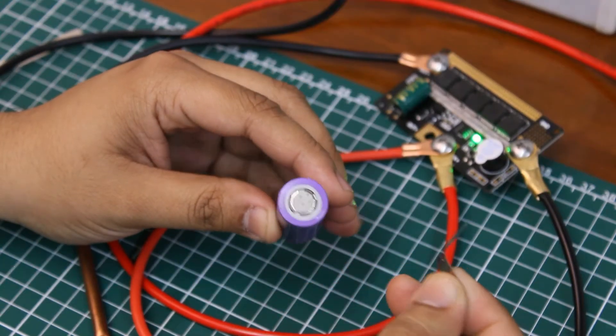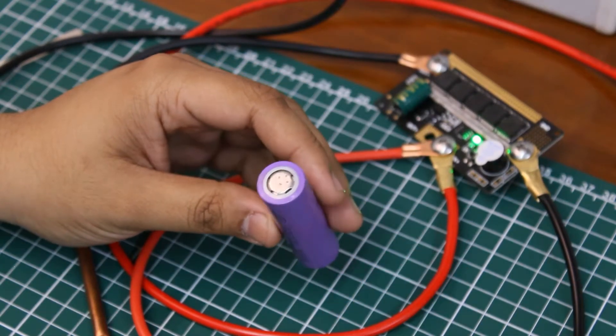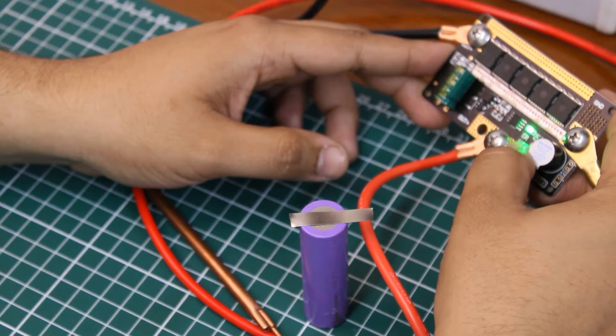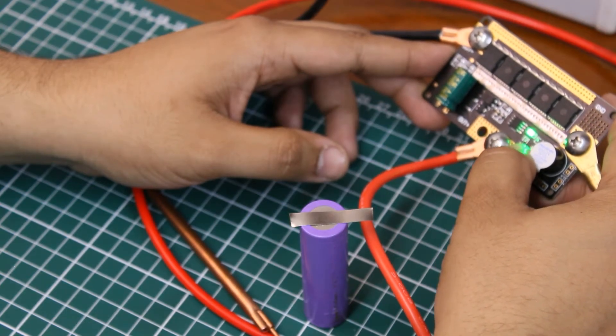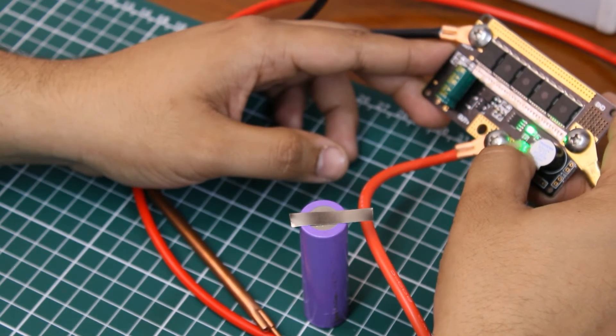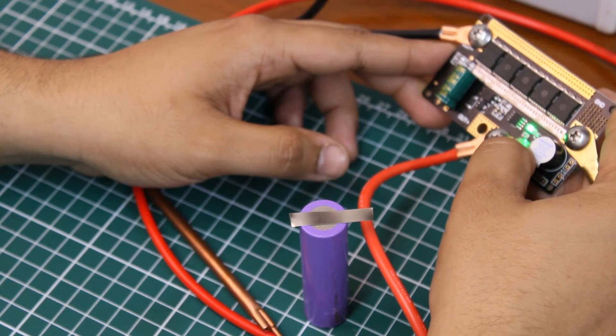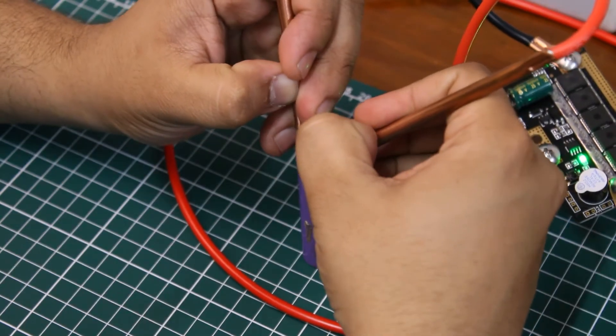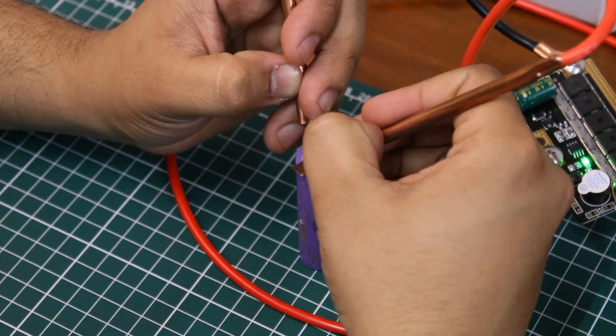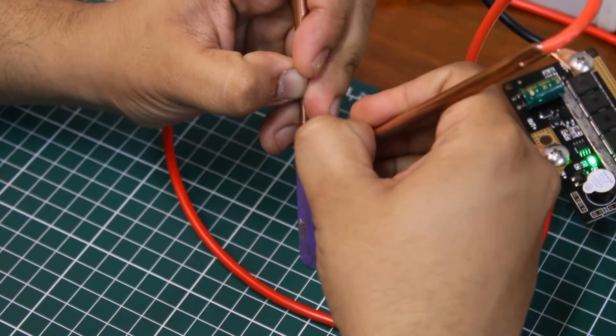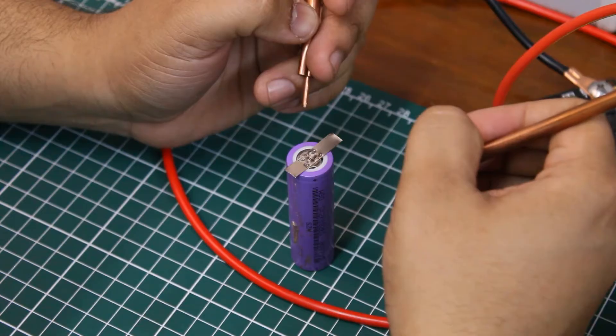As you can see, the welding was not strong as I did not apply enough pressure and the power setting was on level one. Now let us try with power setting on level five. This time the weld was pretty strong and I couldn't remove it easily.